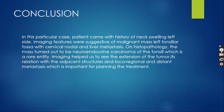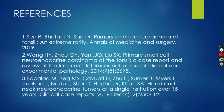To conclude, in this particular case, the patient came with a history of neck swelling on the left side. Imaging features suggested a malignant mass in the left tonsillar fossa with cervical nodal and liver metastasis. On histopathology, the mass turned out to be neuroendocrine carcinoma of the tonsil, which is a rare entity. Imaging helped us to see the extension of the tumour, its relation with adjacent structures, and loco-regional and distant metastasis, which is important for planning the treatment. Thank you very much.